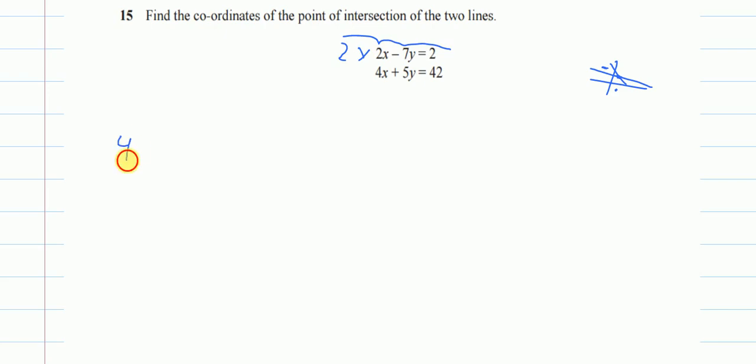So it will become 4x minus 14y is equal to 4. So I have multiplied everything by 2 and the equation under it is the same as it is. I haven't changed anything.